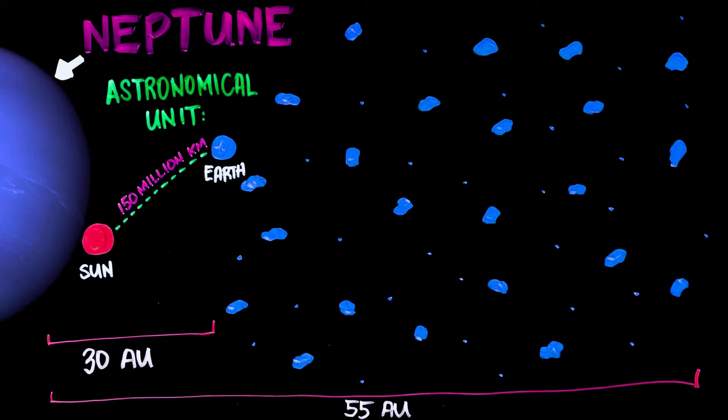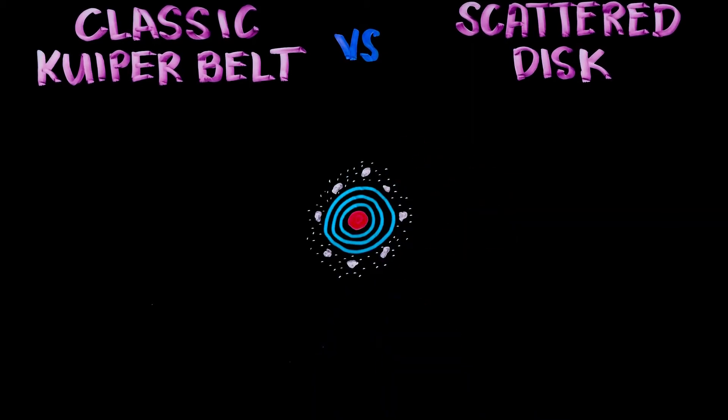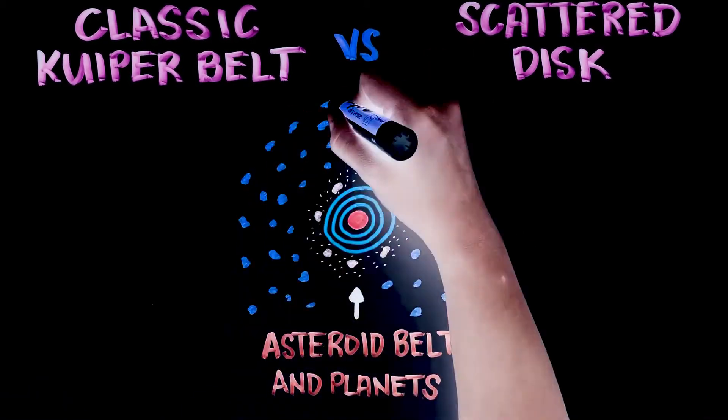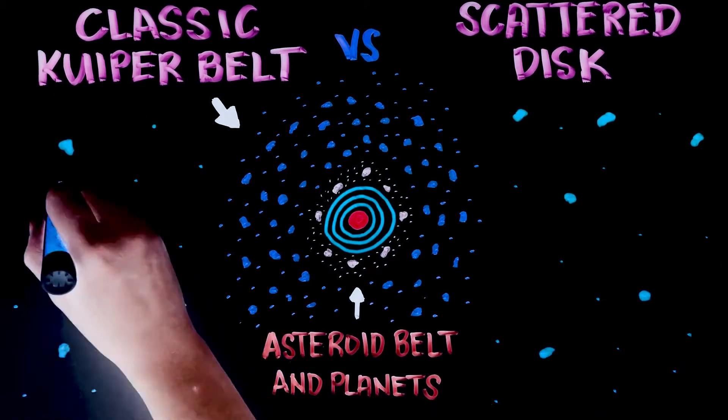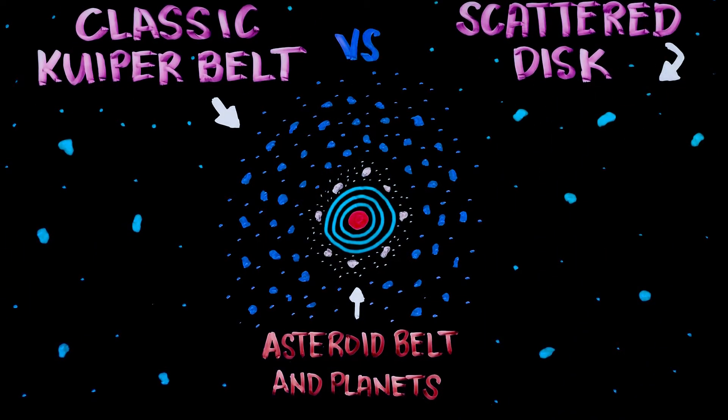The Kuiper Belt has two parts: the classic Kuiper Belt and the scattered disk. The classic Kuiper Belt is the densest and busiest part of the belt, while the scattered disk is populated with objects that have more eccentric and tilted orbits.